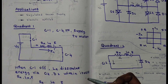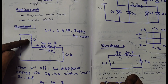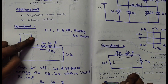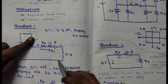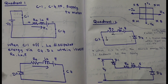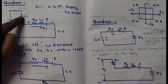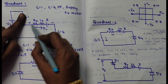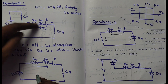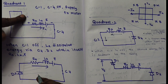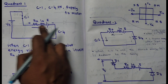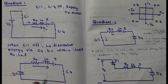When switch C1 is turned off, the supply gets detached from the circuit. The stored energy in the inductor then freewheels — it dissipates the stored energy within itself to get ready for the next cycle. With C4 still on and C1 off, the inductor energy freewheels in the same direction via diode D2. In this quadrant, voltage is positive and current direction is also positive.